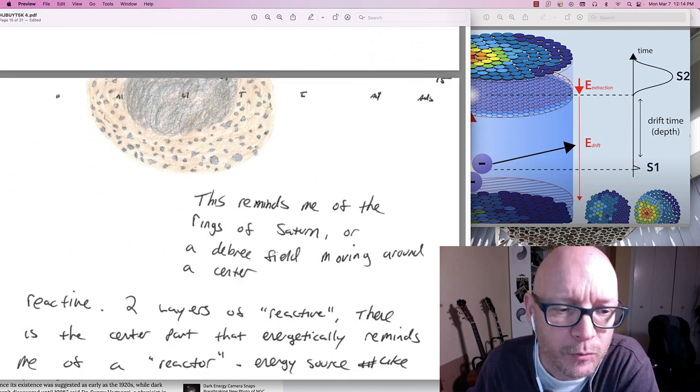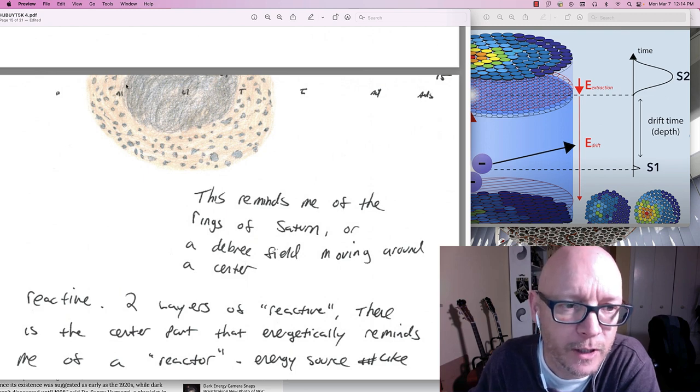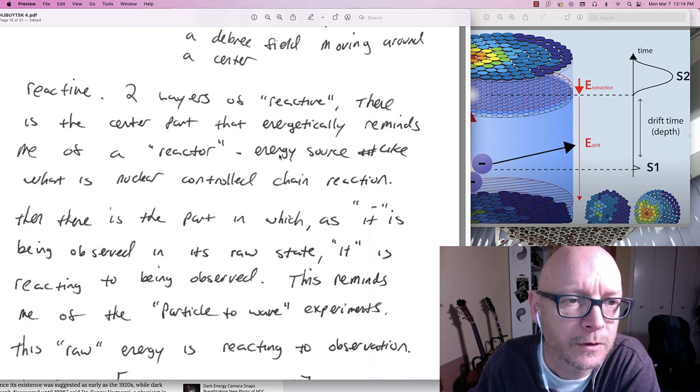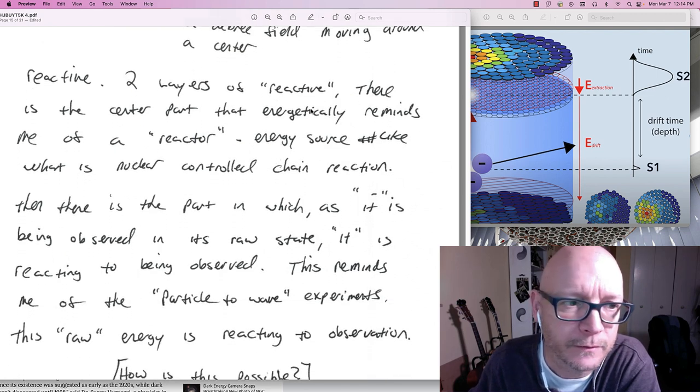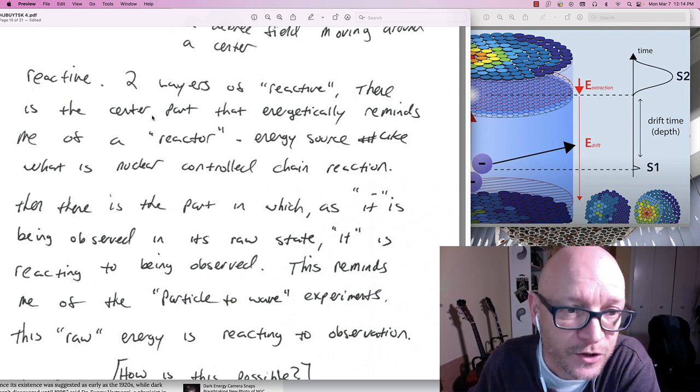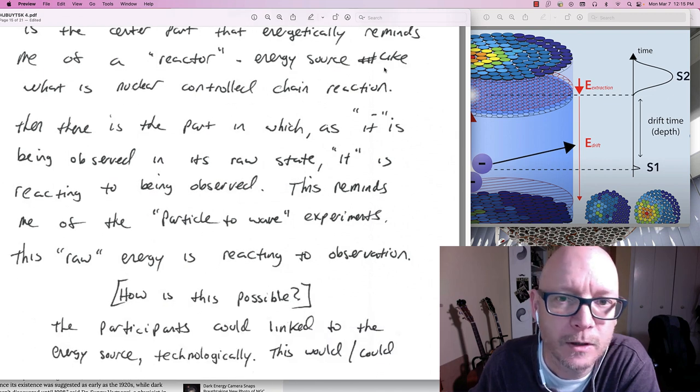This reminds me of the rings of Saturn. Or a debris field. Moving around a center. Reactive. Two layers of the reactive. So I'm saying there's two layers of the reactive. There is the center part that energetically reminds me of a reactor. Energy source. Like what a nuclear controlled chain reaction. Then there is the part in which as it is being observed in its raw state. It is reacting to being observed.